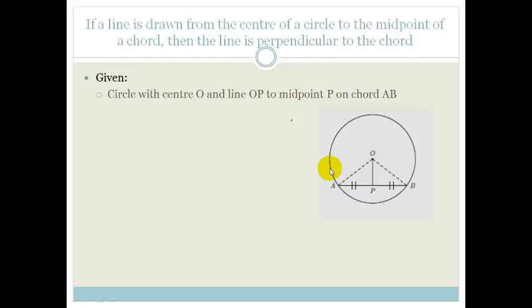This is what you will be given when you get asked to prove this. You get given a circle with center O and line OP to the midpoint of chord AB. So we get told that this line is going from the center circle to P and we get told that it's the midpoint.